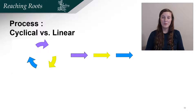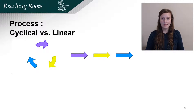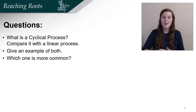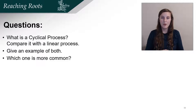Photosynthesis is an important process that allows life on Earth. There are a lot of different types of processes — cyclical processes and linear processes. In order to start thinking about these processes, I have a few questions for you: What is a cyclical process? Compare it to a linear process, give an example of both, and which one is more common? Please pause the video and answer these questions with your partner or on your own.